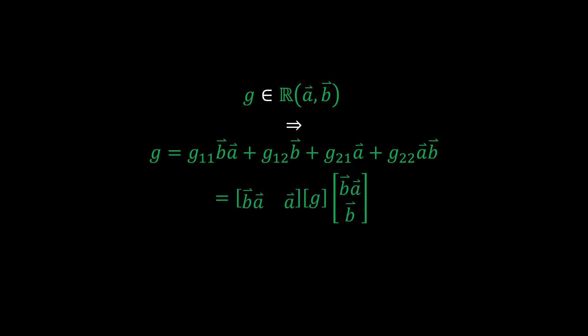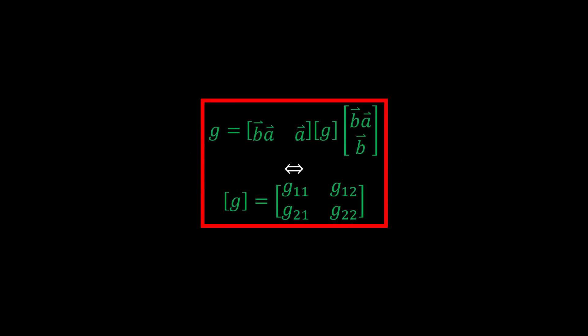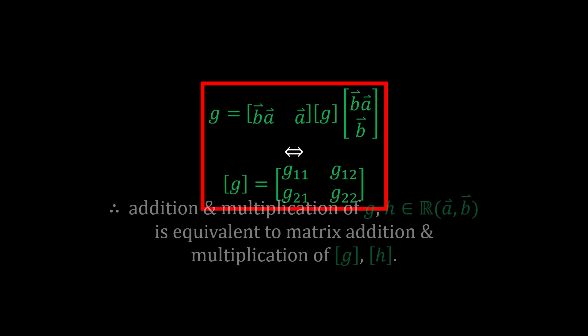But what is this matrix of G? Well, it's just the matrix of the scalars over the canonical nilpotent basis. This implies that the manipulation of geometric numbers G and H is equivalent to the manipulation of their 2x2 matrices in the canonical nilpotent basis.